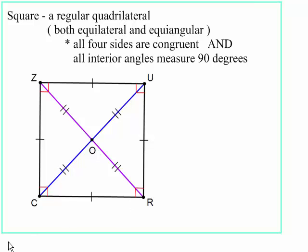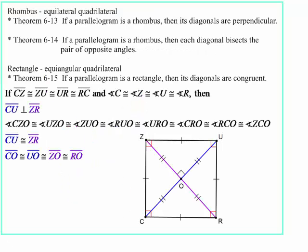Let's see. Diagonals are perpendicular. And the diagonals bisect the opposite angles. Now, all of those interior angles of that square are congruent. So, therefore, all those bisected angles are all 45s. Every one of them. And the diagonals are bisected, and the diagonals are congruent. So that means this segment, and this segment, this segment, this segment, are all the same length.